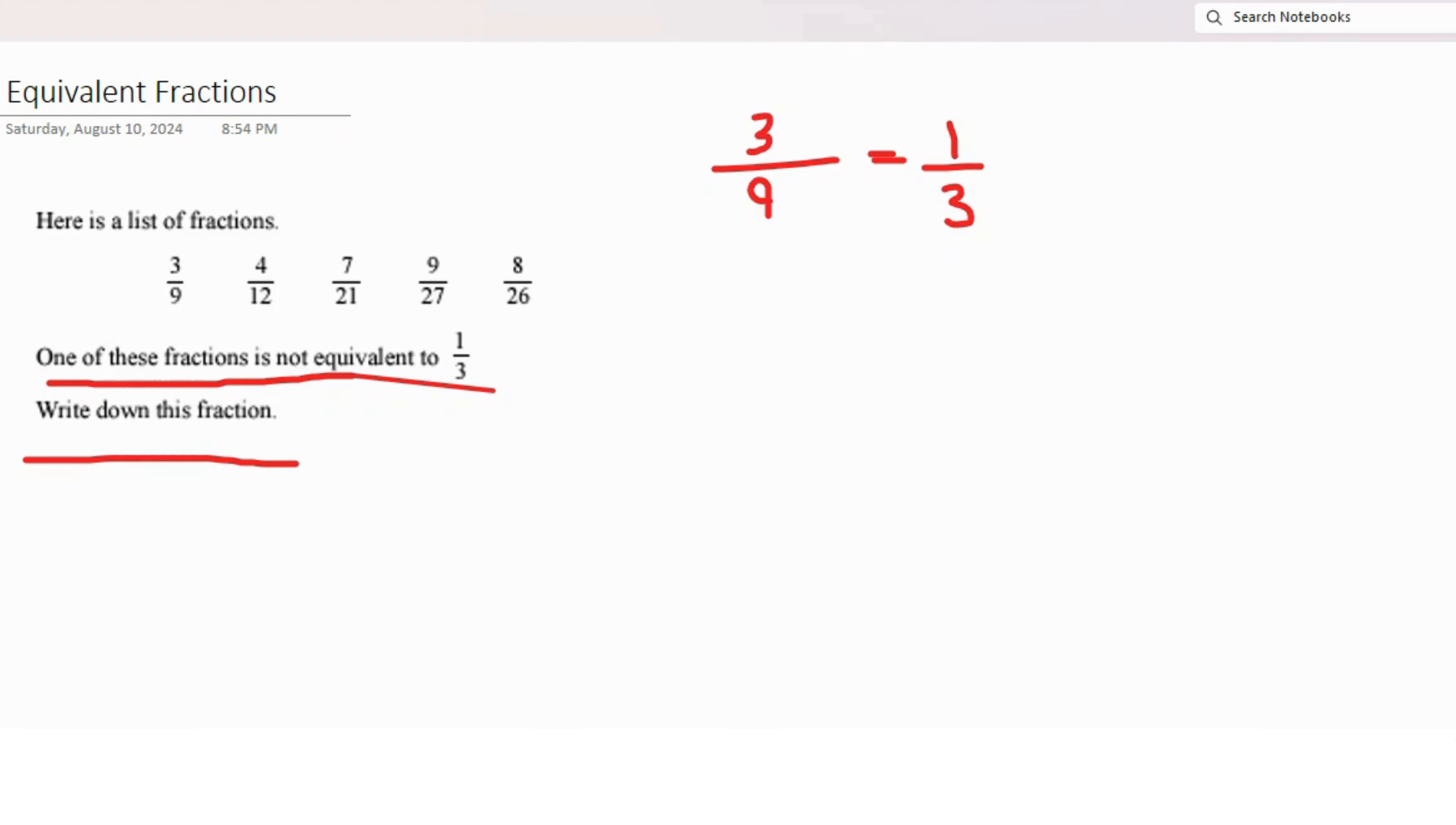We already found that 3 out of 9 equals 1 out of 3. Let's check the next one, which is 4 out of 12. If you look at 4, you see 4 times 1 is 4 and 4 times 3 is 12, so this is also equivalent to 1 out of 3.